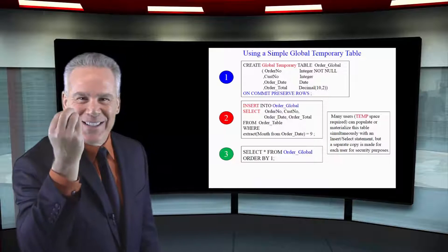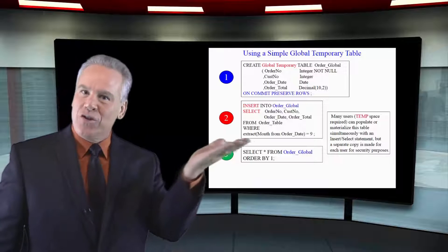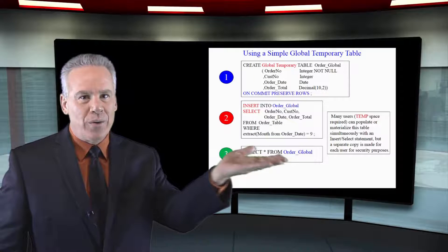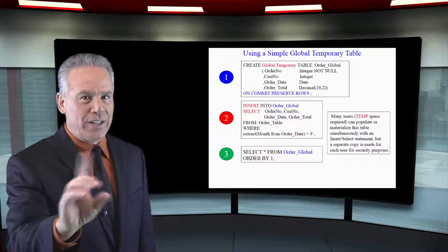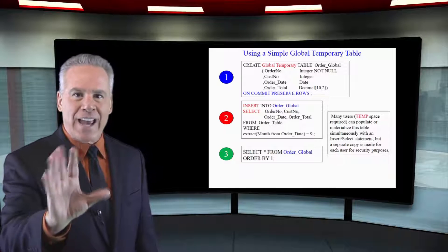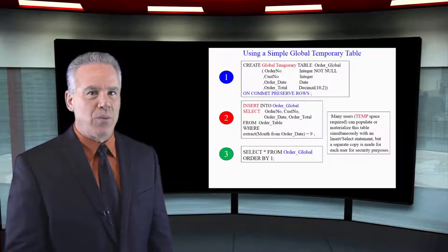It's using your temp space to populate it and then your spool space to query it. So it will save you space and it's always out there. That's how a global temporary table is designed to work.